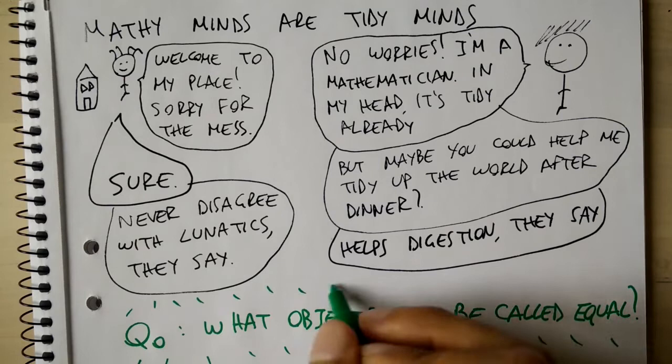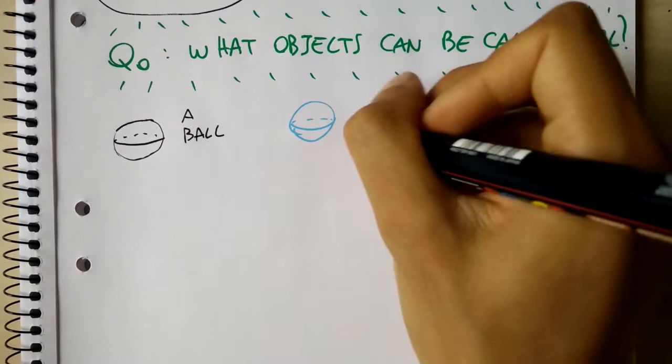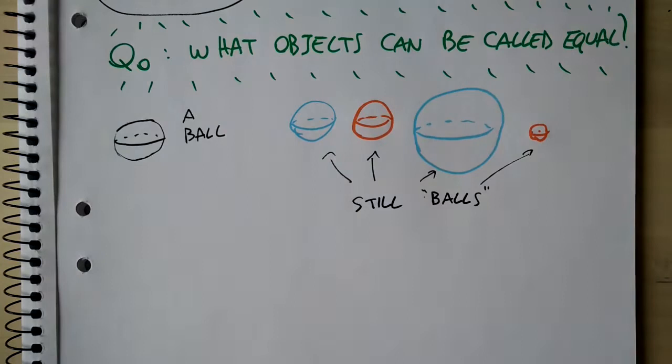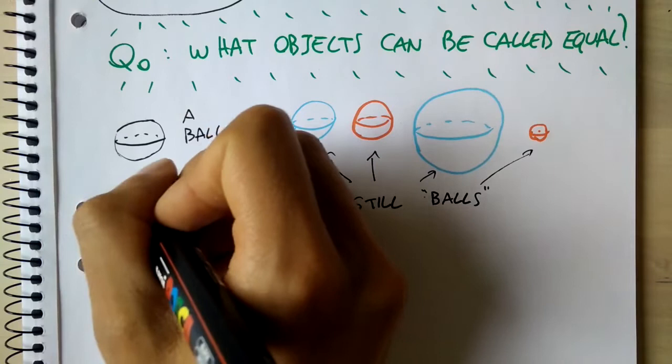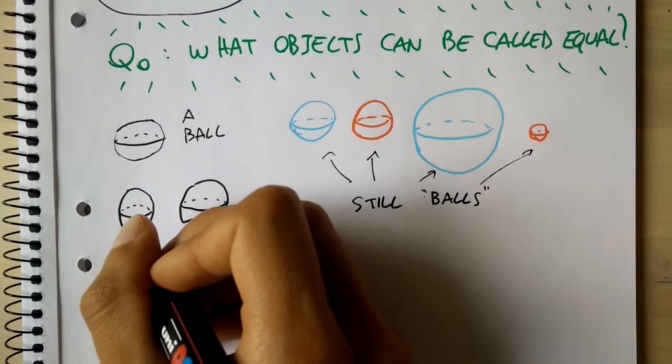One could say that pencils and pens both belong to the stationary category, for example, but we're looking for something more fundamental here, something that just looks at the objects regardless of the human goal they were devised for. So in the end, the fundamental question we are asking is what objects can be called equal?